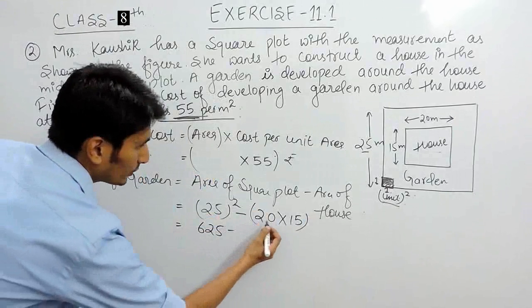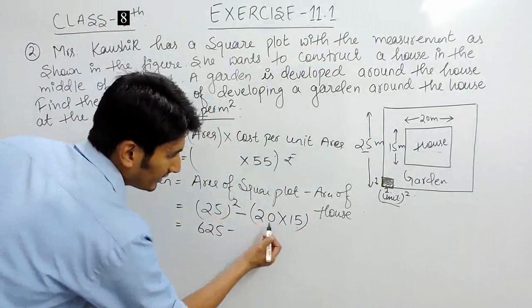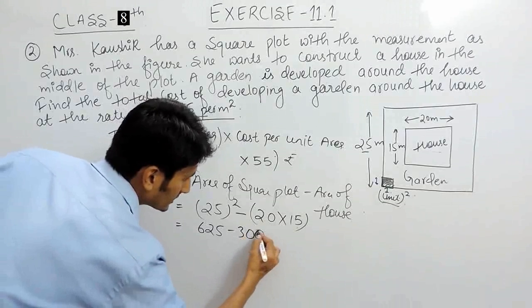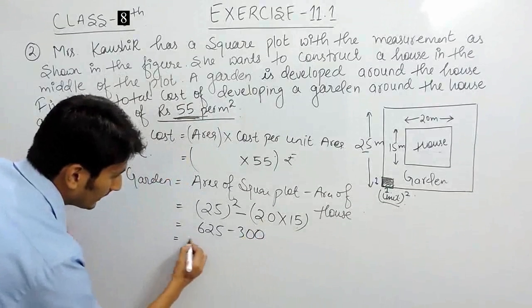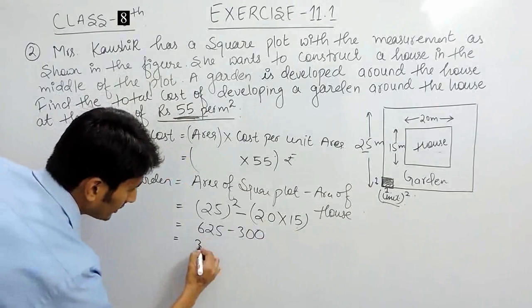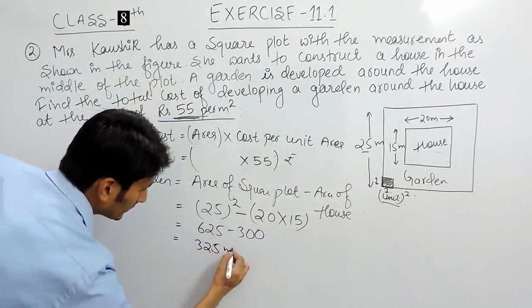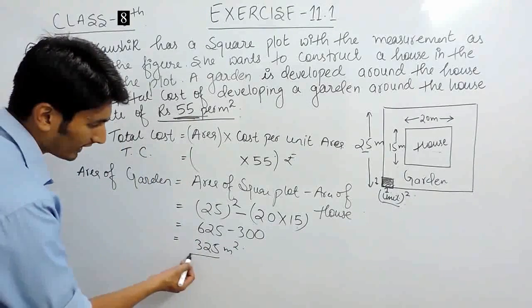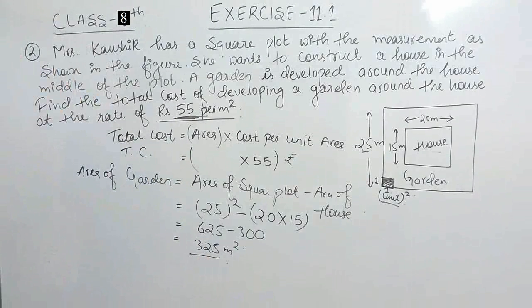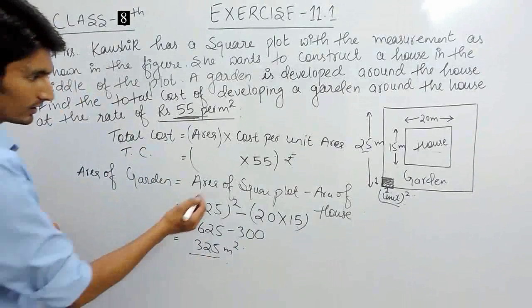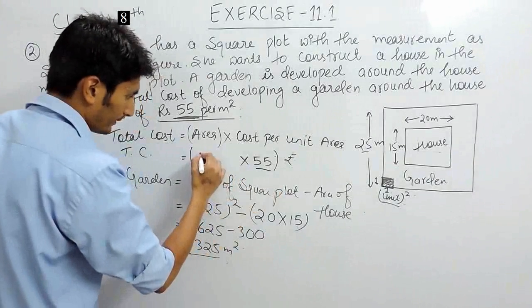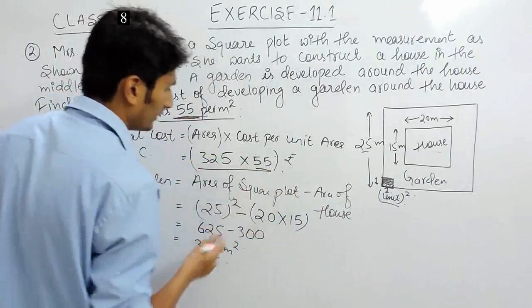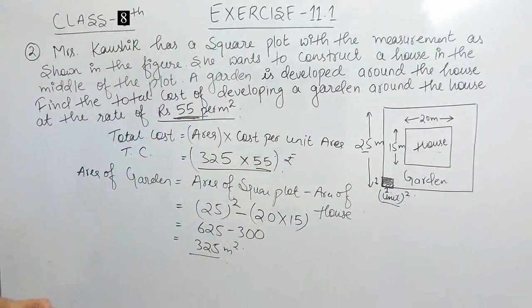Subtracting, the area of garden = 625 − 300 = 325 square meters. So 325 m² is the area of the garden.